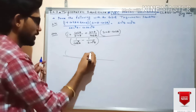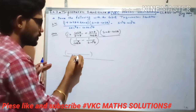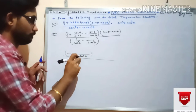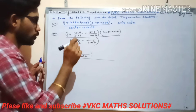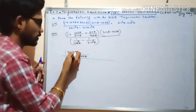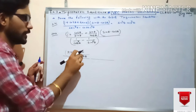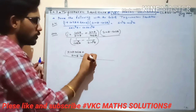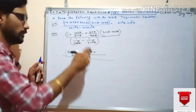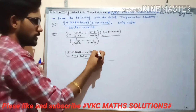For the first bracket in the numerator, taking LCM sinθ·cosθ: multiplying 1 by sinθ·cosθ gives sinθ·cosθ; for cosθ/sinθ, sin cancels and we get cos·cos = cos²θ; for sinθ/cosθ, cos cancels and we get sin·sin = sin²θ.